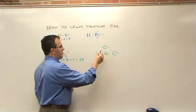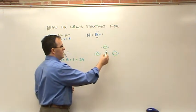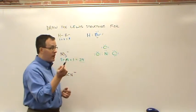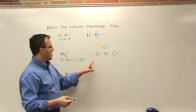So let's double check and make sure that that works. Two, four, six, eight, ten, twelve, fourteen, sixteen, eighteen, twenty, twenty-two, twenty-four. So we're good there. And do we have eight electrons around each atom? Yes.